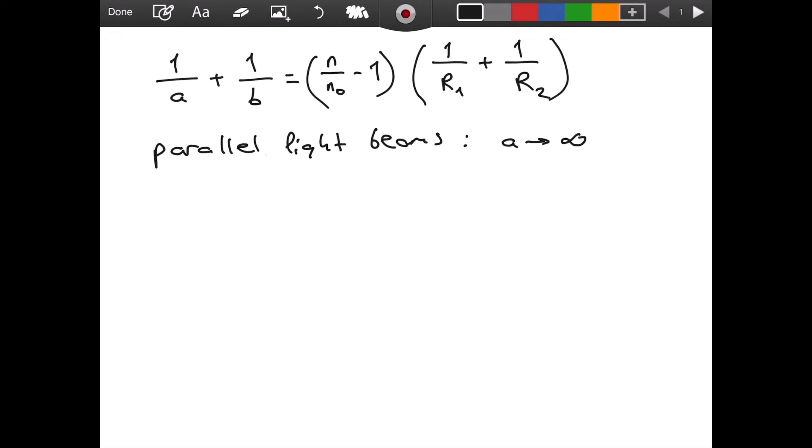And if we substitute this, as you can notice, this first term, one over A, is going to go to zero. And as we just argued, in this case, B will go to f, the focal length.